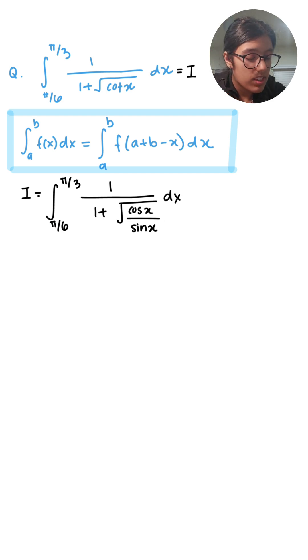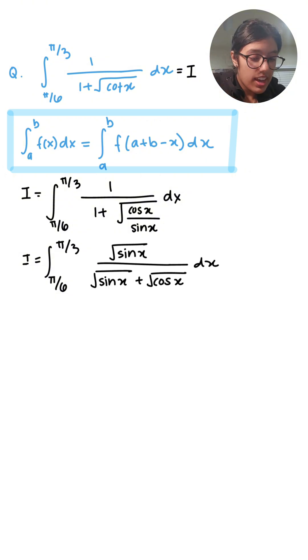Now I'll simplify this by getting a common denominator of √sin x in the denominator. Next, I'm going to apply this formula: ∫[a to b] f(x)dx = ∫[a to b] f(a+b-x)dx, where the bounds stay the same.